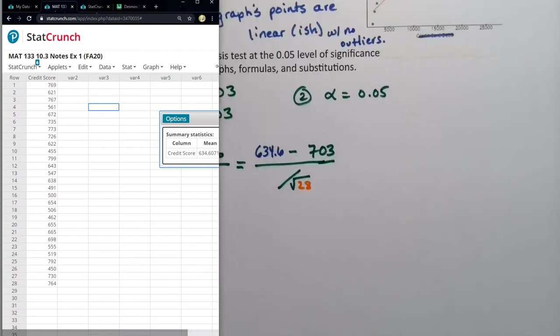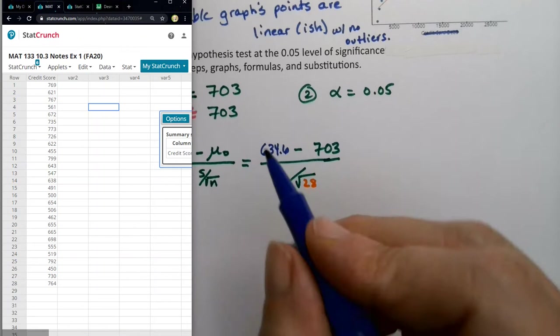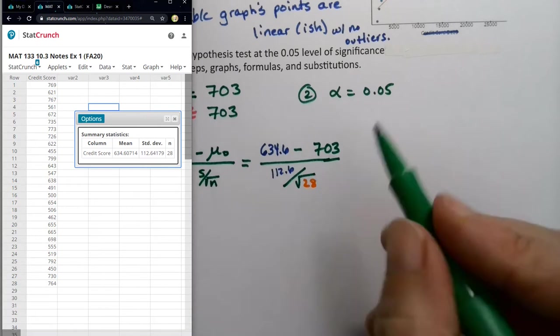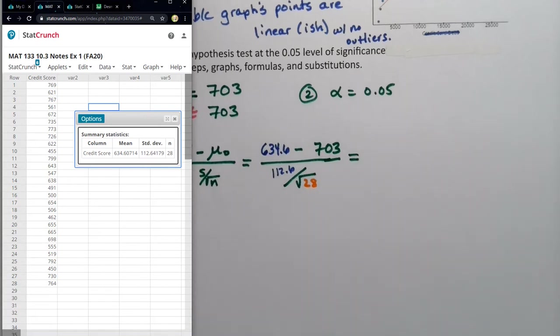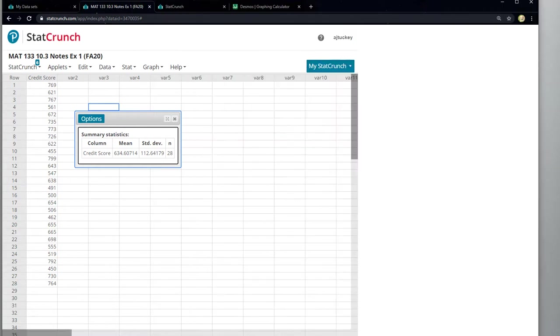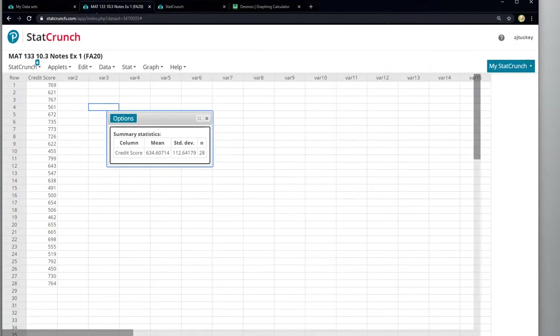Right there. But that's not the actual value. That's not what I'm looking for. That was just to help me along. I still need to be able to find the value from the calculator. Or excuse me, from StatCrunch.